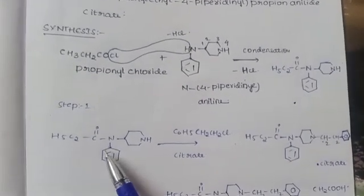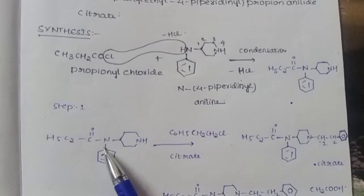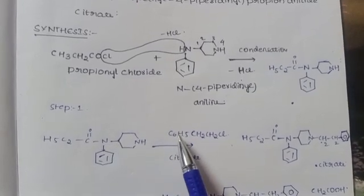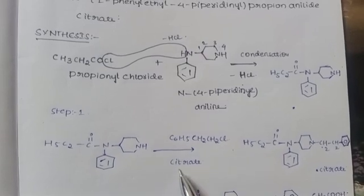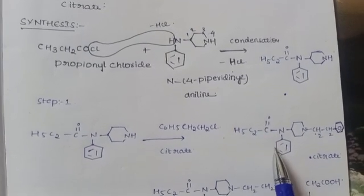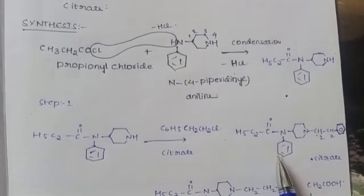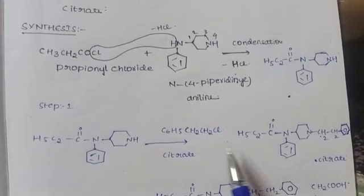Later, in the second step, when this intermediate reacts with C6H5CH2CH2Cl and citrate, it forms the original product, which is fentanyl citrate.